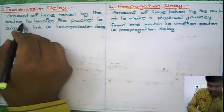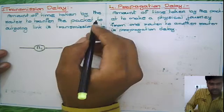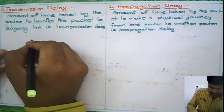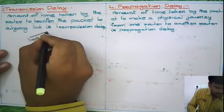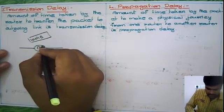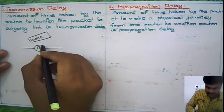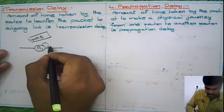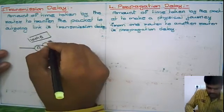The router has to transfer the packet, so assume that you have 100 KB of data. This data you have to keep on this outgoing link. This we are calling as transmission delay.